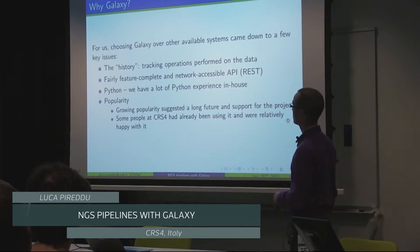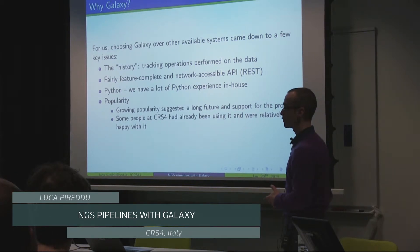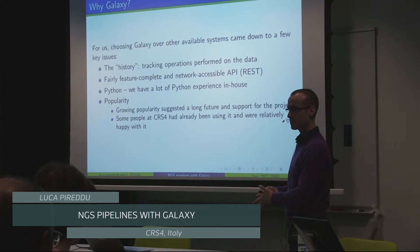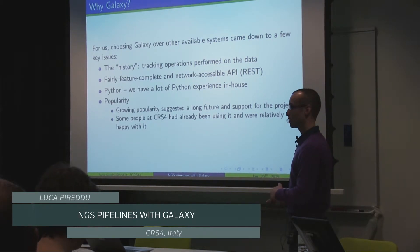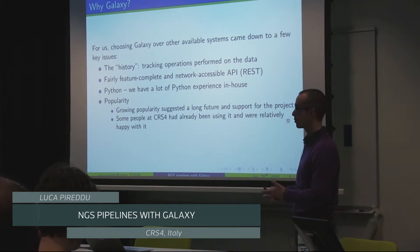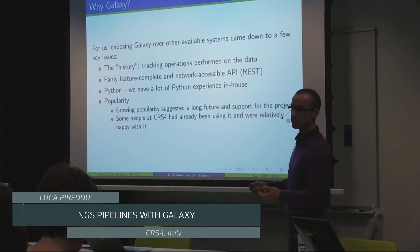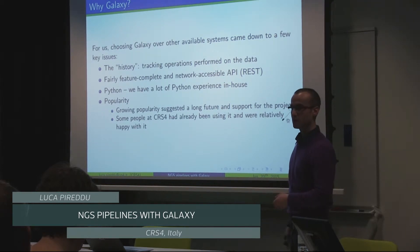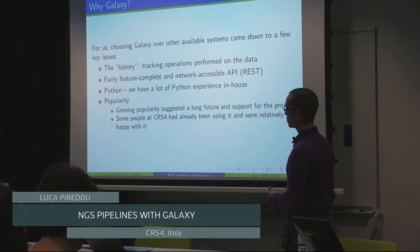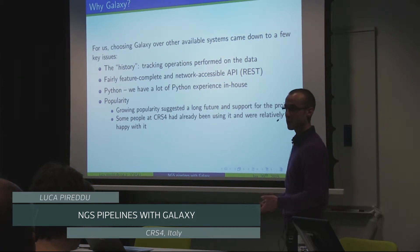Choosing Galaxy over other available systems came down to a few key issues. The first was the history - not all workflow tools offer this feature, and for us, aiming to have reproducibility, this was very important. It's fairly feature-complete. Its API offers a web API using REST, so it's network accessible, and you can do programmatically more or less everything you can do through the main graphical user interface. It's written in Python, which was an advantage since we have a lot of in-house Python experience. And its growing popularity means we have community support for a long time to come. In addition, some people at Sirius 4 had already been using it and were happy, so that was a good sign.